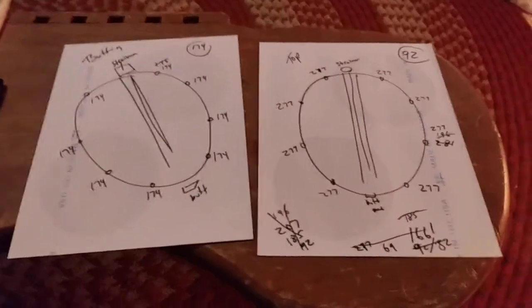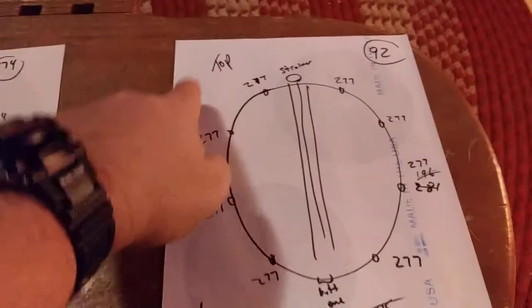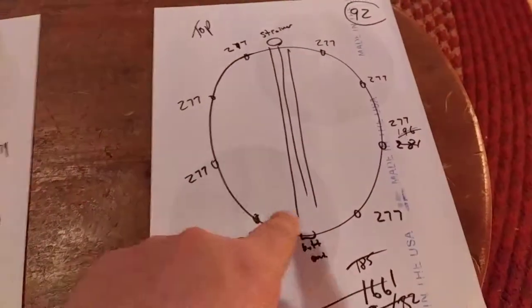As you can see at the top here, let's look at the top head. This is where the strainer is, this is where the butt end is, and each of the lugs around it.